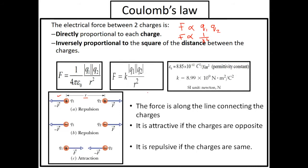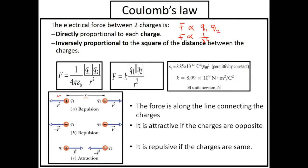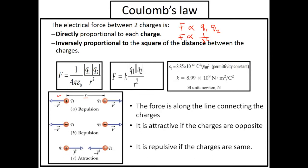Here r is not a radius — it is the distance between the two charges. Students often write the formula perfectly but explain r as a radius, which is incorrect. The force directly depends on the product of the magnitudes of the two charges, and it has an inverse relation with the square of the distance between them.